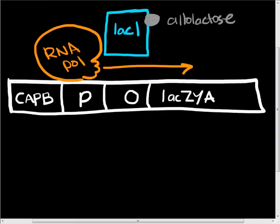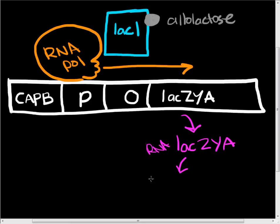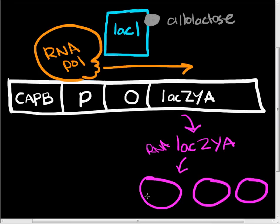This will lead to the production of the lacZYA transcript downstream, and the production of beta-galactosidase, the lacY protein, and the lacA protein. Usually when studying the lac operon, we test for the presence of beta-galactosidase, as this is an easy test to do.